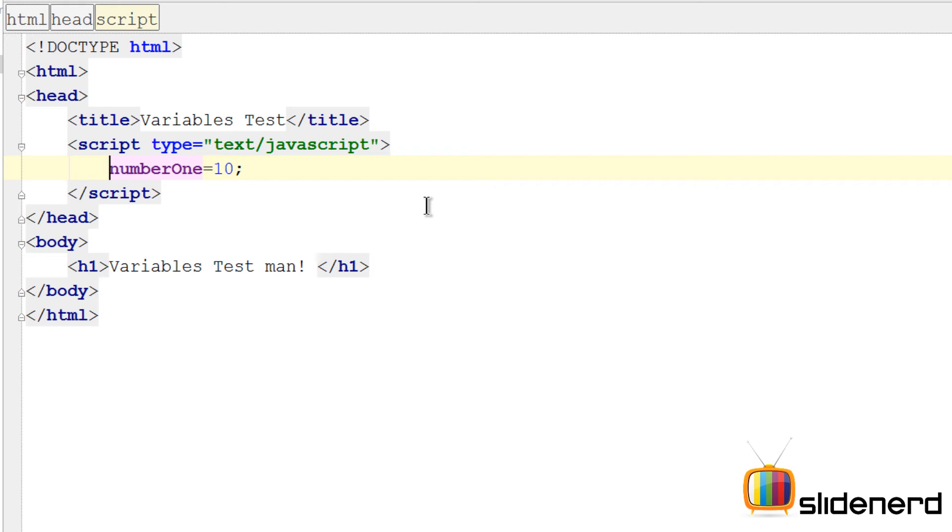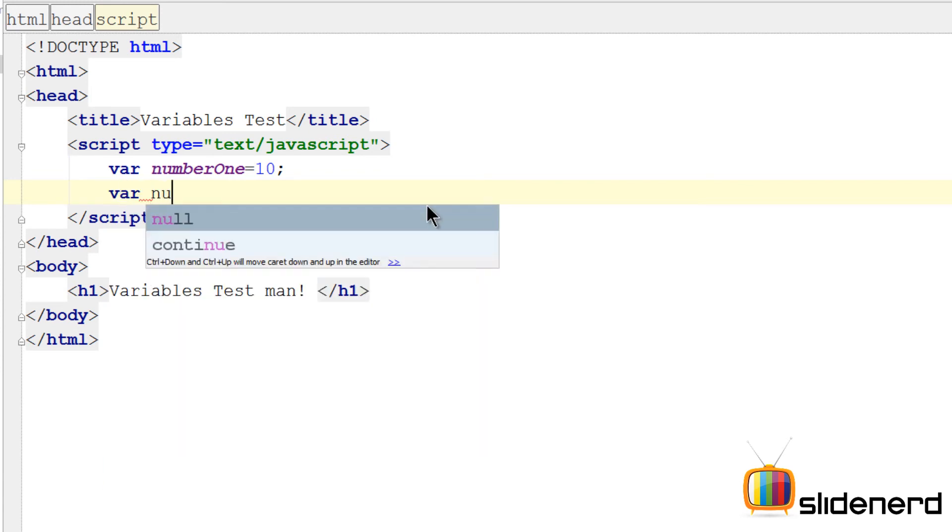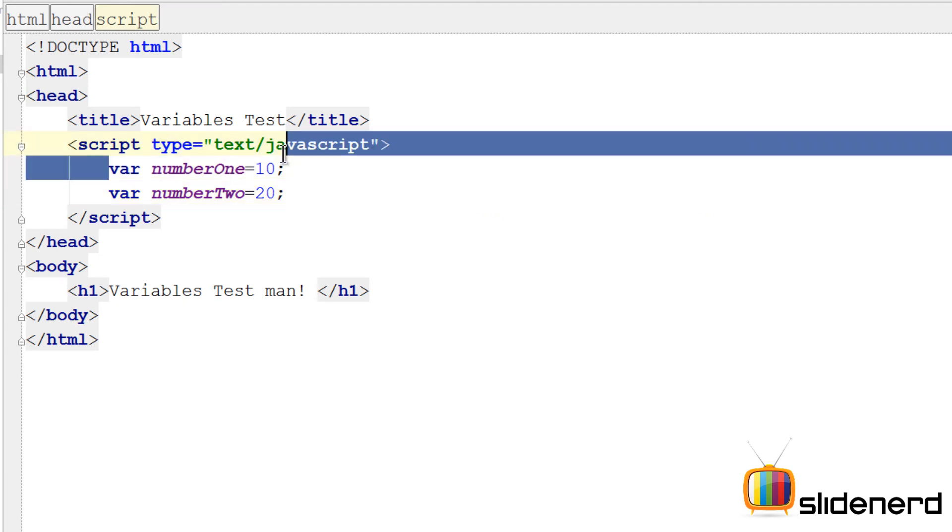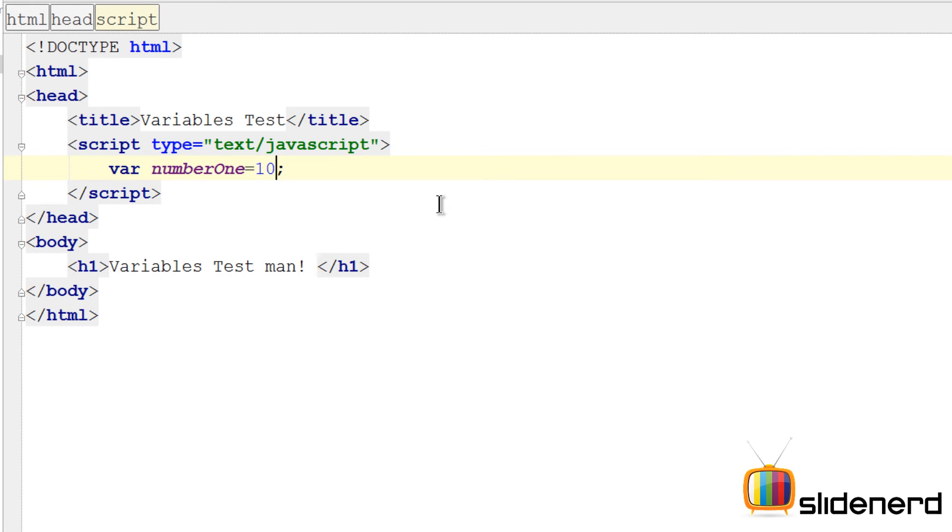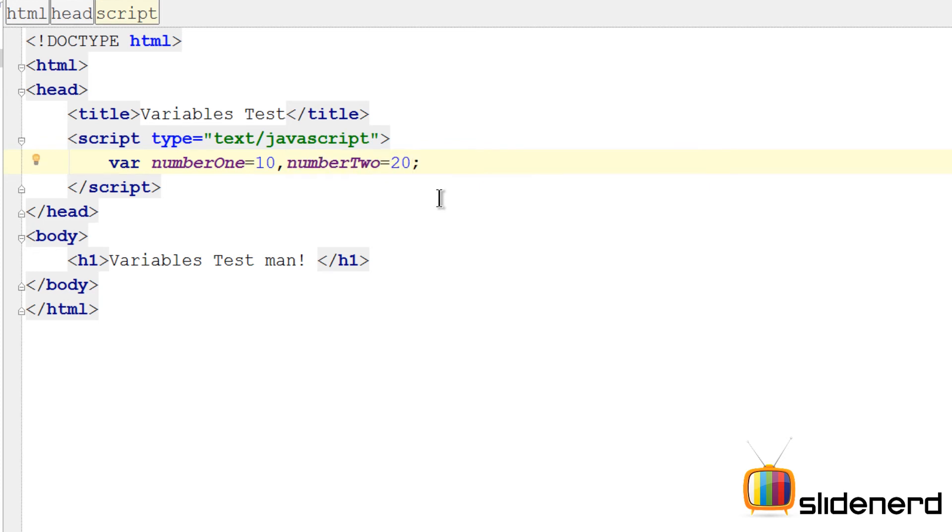This is what your var keyword does, and that's why you write var space number one is ten. To make another number you could say something like var number two equals to twenty. This is two separate statements. You could also mix them up together - just remove this after number one equals to ten, put a comma, say number two equals to twenty. This is another way of doing that.